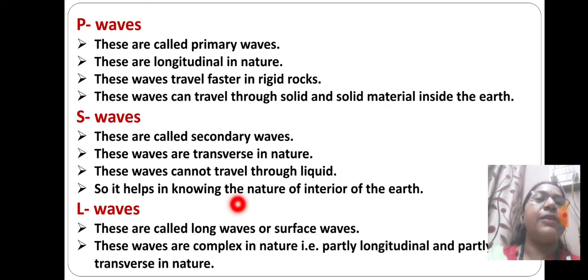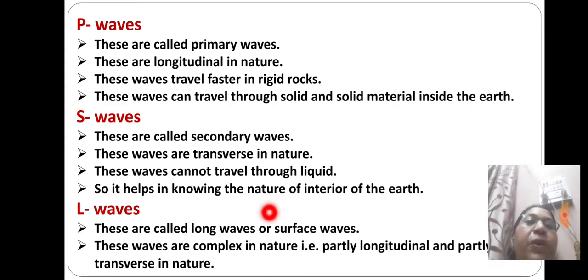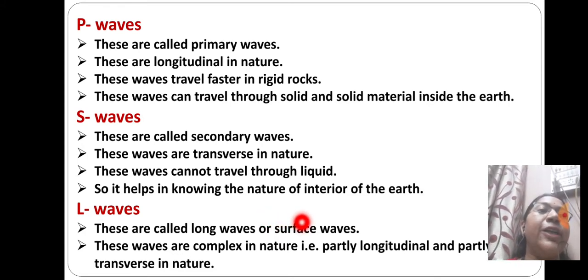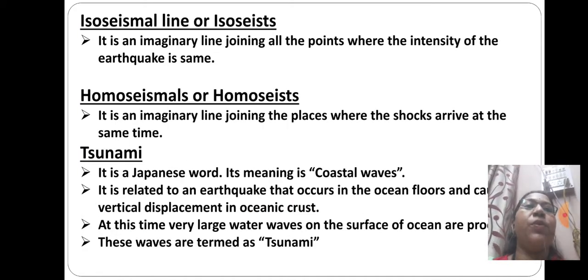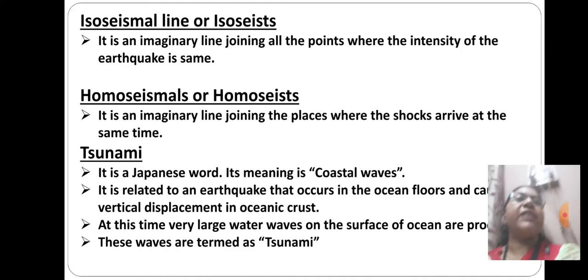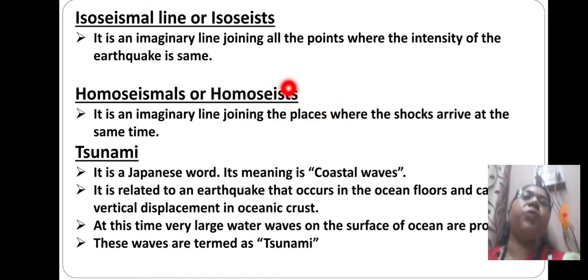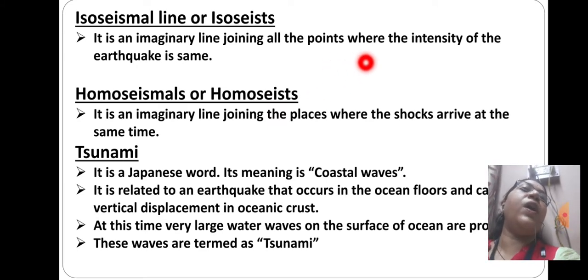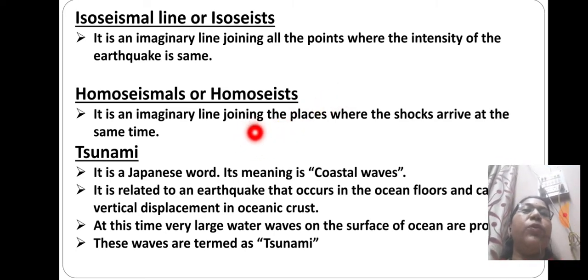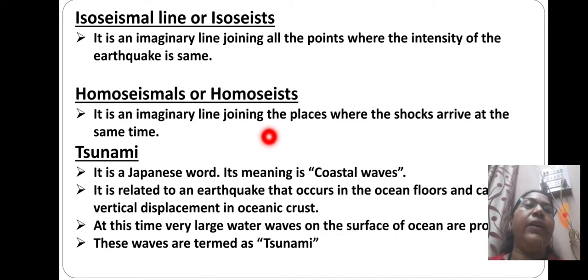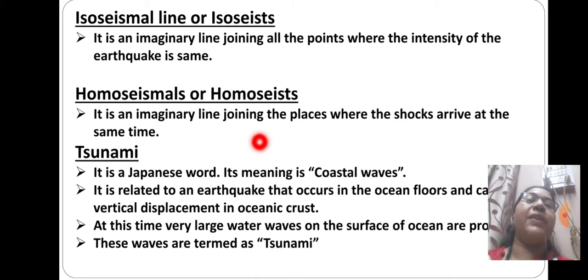L waves are called long waves or surface waves. These waves are complex in nature — partly longitudinal and partly transverse. The isoseismal line, or isocyst, is an imaginary line joining all the points where the intensity of earthquake is the same. These are small definitions but very important.